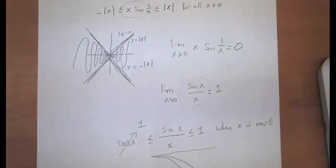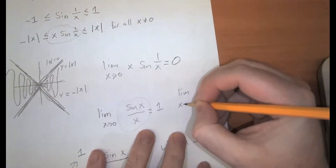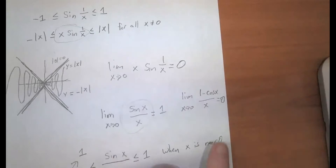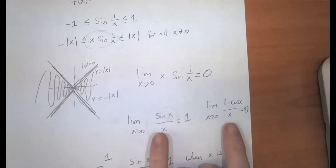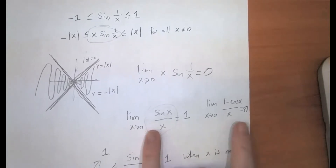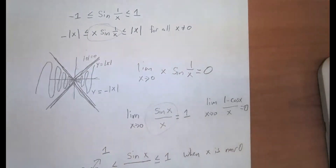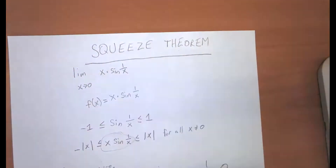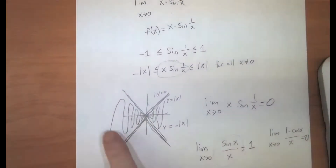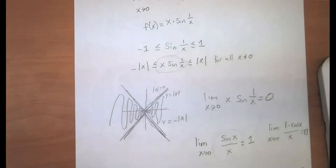This is a critically important fact, and there's a follow-up fact that is equally important: the limit as x approaches 0 of 1 minus cosine x over x is equal to 0. You can prove this also using the squeeze theorem. These are going to be really crucial facts in the next unit when we start talking about derivatives, because they will allow us to calculate the derivative of sine using algebra and a few trig techniques. The squeeze theorem isn't something you'll be asked to perform in this class, but it's an important technique to appreciate as an extra tool for calculating complicated limits.